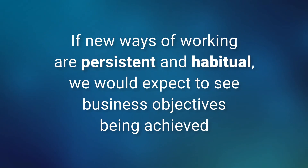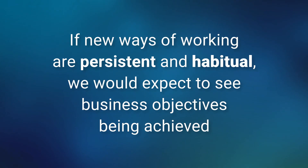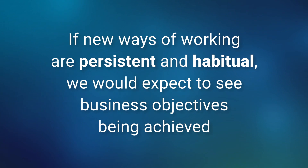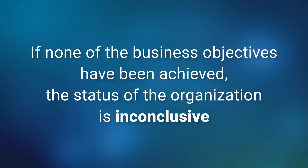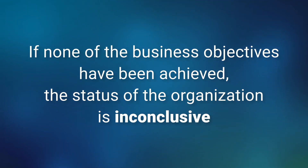How can consistency be checked? Let's start by asking whether an organization is achieving its business objectives. If an organization has gone through an improvement program and new ways of working are persistent and habitual, we would expect that at least some of the business objectives have been achieved and that measurements made over time can prove it. If none of the business objectives have been achieved or all indicate not yet achieved, the status of the organization is inconclusive. The performance improvements may have not worked or not enough time has passed to allow the improvements to become persistent and habitual. This information should be reflected in the appraisal results.